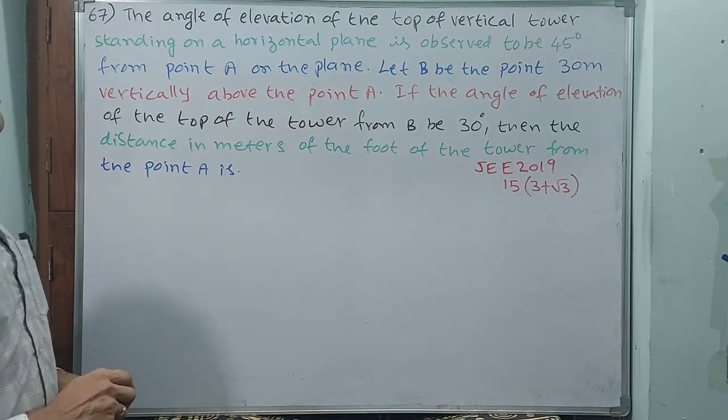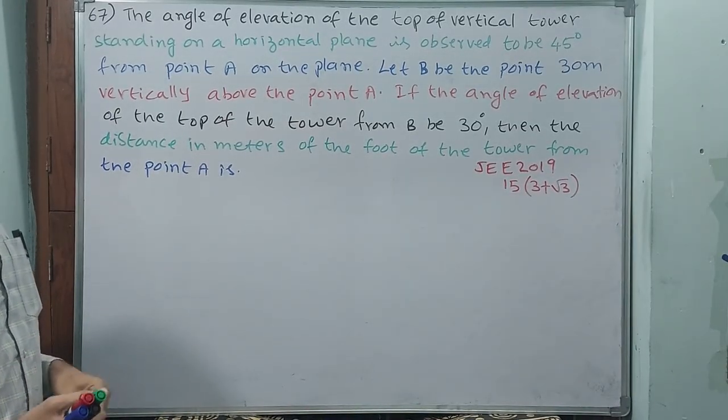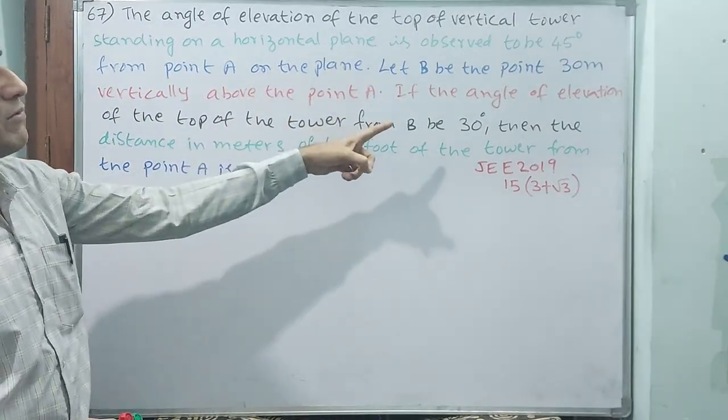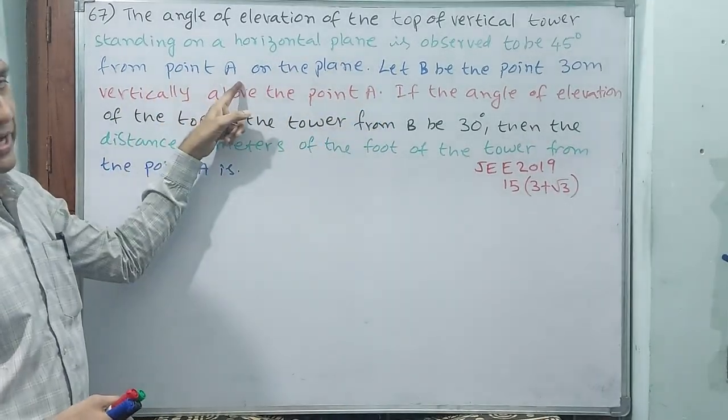Okay, see question number 57. The angle of elevation of the top of the vertical tower standing on a horizontal plane is observed to be 45 degrees from a point A.